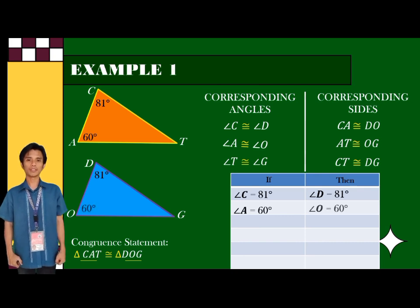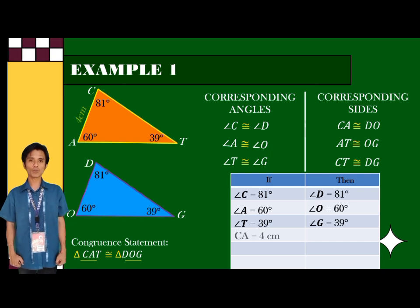And if the measure of angle A is equal to 60 degrees, the measure of angle O is also 60 degrees.